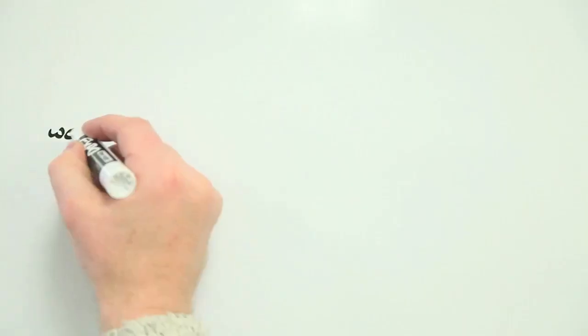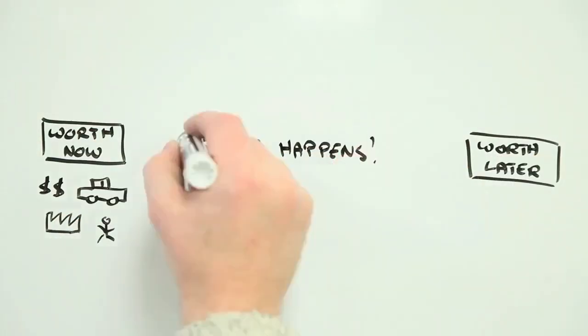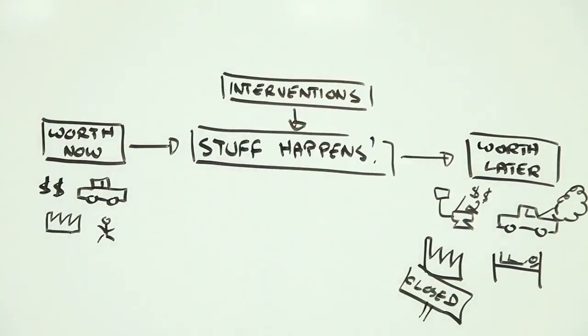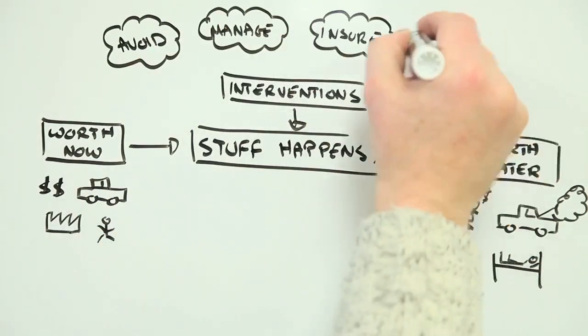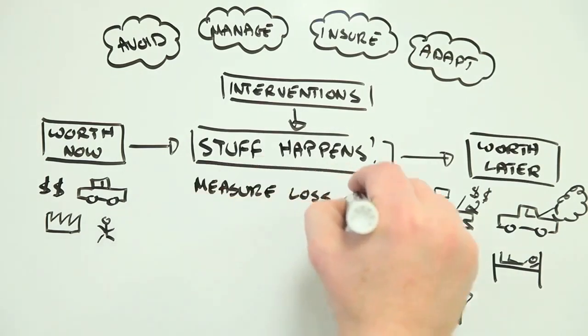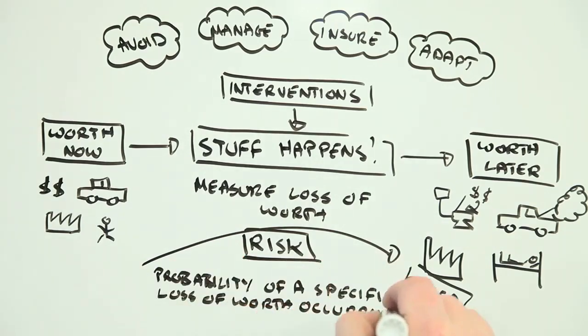To recap, things that are important to us have worth. Bad stuff happens and that worth is diminished. We can reduce this loss of worth or its impacts through avoidance, insurance, or adaptation. Risk is a number that indicates the probability of a specific loss of worth occurring, and it's important for deciding how to handle the bad stuff and protect worth.